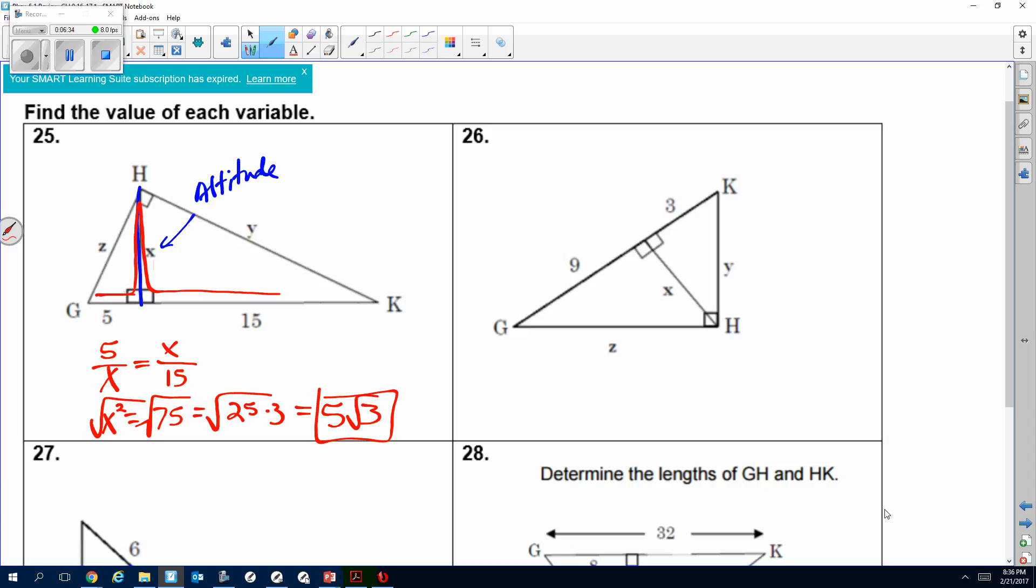Or if you put in your calculator, that's approximately 8.7. So that's if the variable or the number is inside. If we're trying to find what's on the outside, so I'm going to have to erase this part right here. If I'm looking for what's on the outside—so like, for example, z is on the outside. z is the leg. If I need to find the leg, that's when I do boomerang.